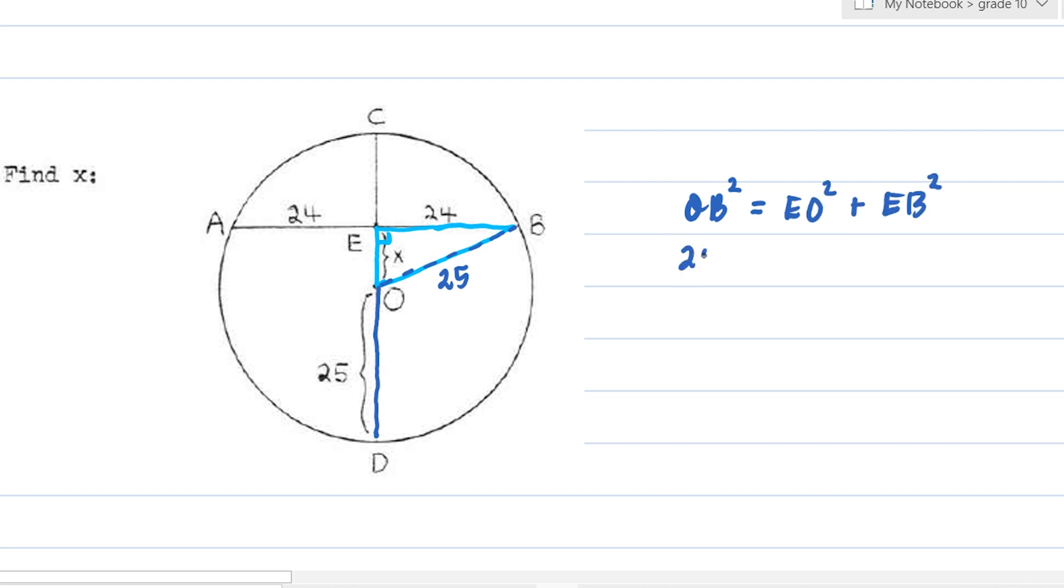Substitute OB is equal to 25. EO, that's your X, plus EB, which is 24. To solve for the value of X squared, that's equivalent to 25 squared minus 24 squared. Let's apply the difference of two squares. So this is 25 plus 24 times 25 minus 24. So that's 49 times 1. So it's 49. And then obviously, X is equal to plus or minus 7. And we will just get the positive one. So therefore, X is equal to 7.